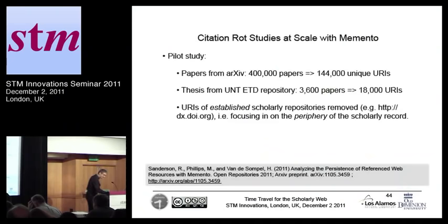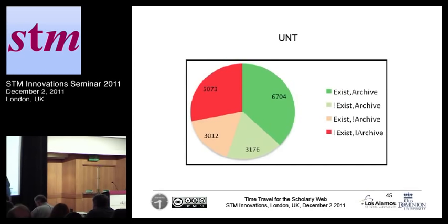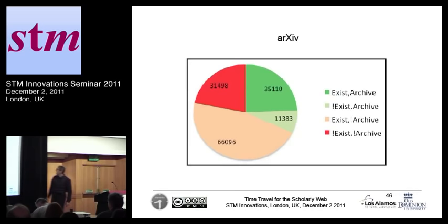This is published so you can look up that paper. For the University of Northern Texas Institutional Repository, we see: links that still exist and stuff is archived; links where the link doesn't work anymore but there's something archived; still exists but nothing is archived; and link doesn't work anymore and nothing is archived. A similar picture appears for the physics archive, with lots of stuff that is not archived and the link doesn't exist.